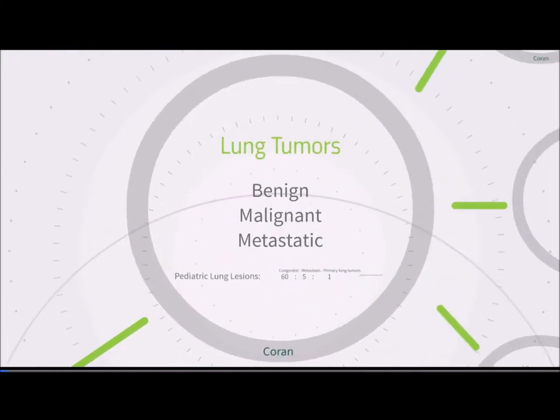Starting with lung tumors — benign, malignant, and metastatic. Most pulmonary tumors in pediatrics are metastatic. Those that are primary tend to be malignant, with up to 76% being malignant and 24% being benign. This makes sense because slow-growing benign tumors haven't had an opportunity to manifest during childhood.